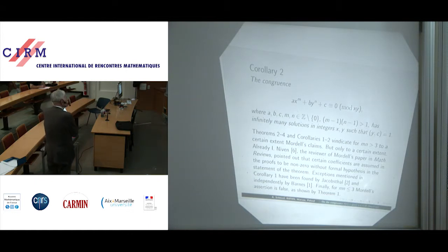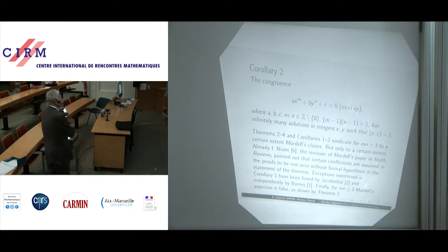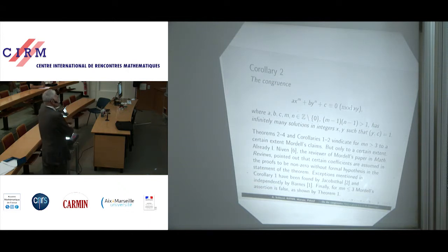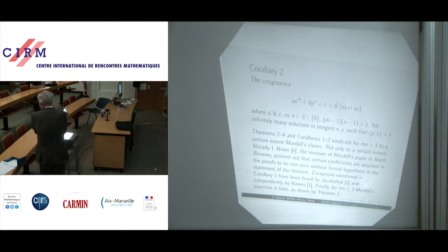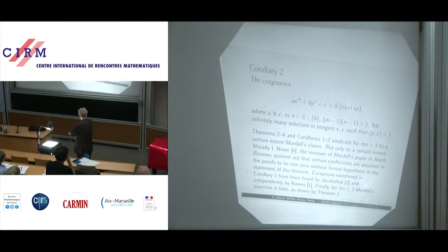Already Niven, the reviewer of Mordell's paper in Mathematical Reviews, pointed out that certain coefficients are assumed in the proofs to be non-zero without formal hypothesis in the statement of the theorem. Exceptions mentioned in Corollary 1 have been found by Jakob Stahl and independently, but much later, by Barnes, who doesn't quote Jakob Stahl. Finally, for MN less than or equal to 3, Mordell's assertion is false, as shown by Theorem 1.